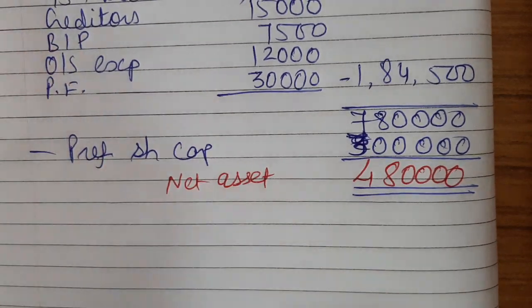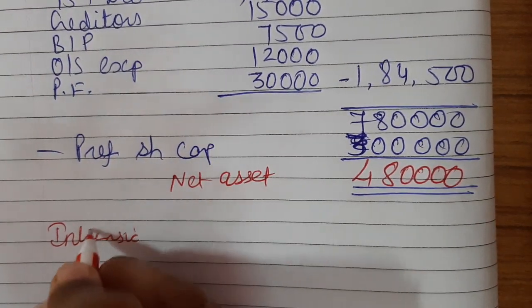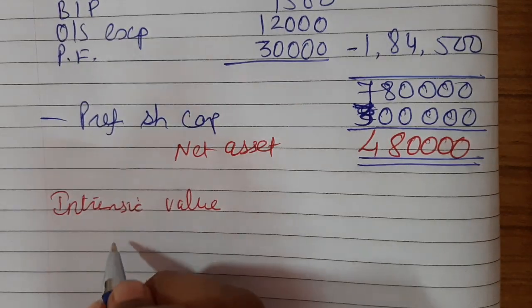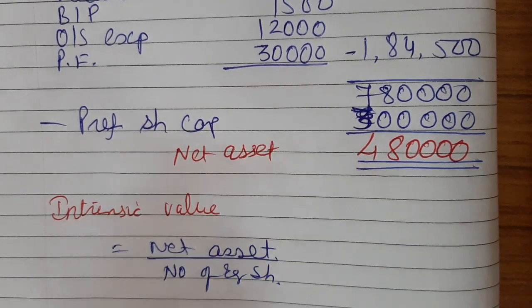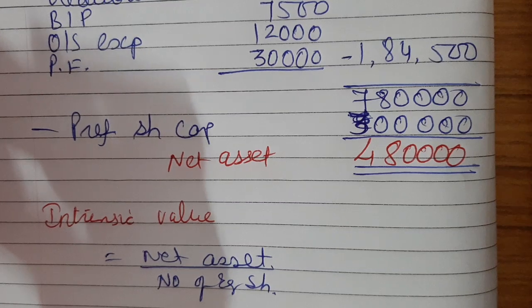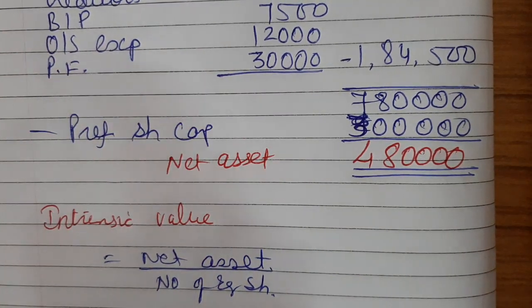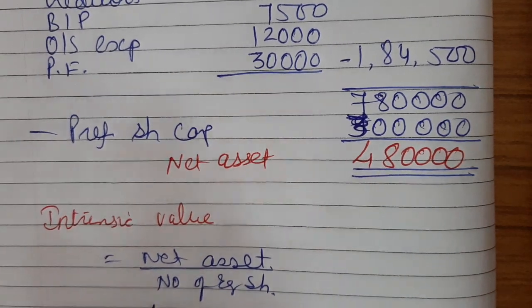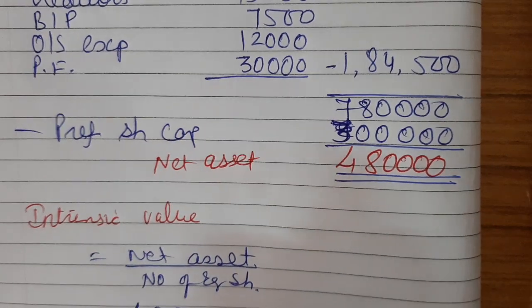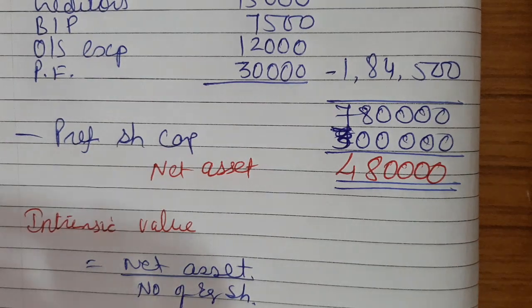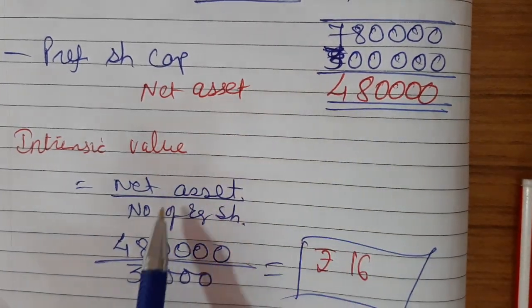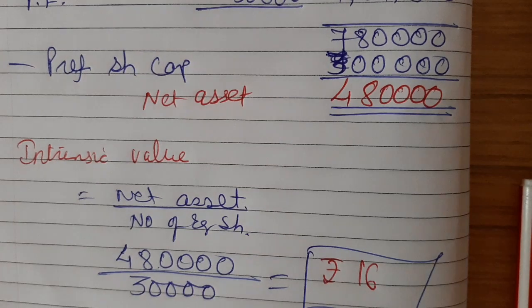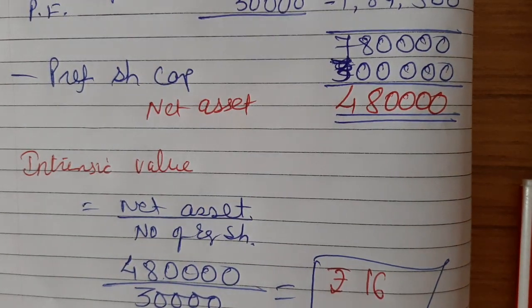Now the intrinsic value formula. The number of equity shares is 3,00,000 shares of rupees 10 each, so 30,000 shares. Net assets of 4,80,000 divided by 30,000 shares gives an answer of rupees 16. So my intrinsic value per share is rupees 16.